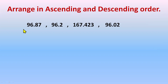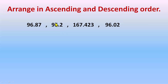So looking at our numbers: 96.87 has two decimal places, this one has one decimal place, this one has three decimal places, and this has two decimal places. Since the decimal places are different, these are unlike decimals. We need to make them like decimals.